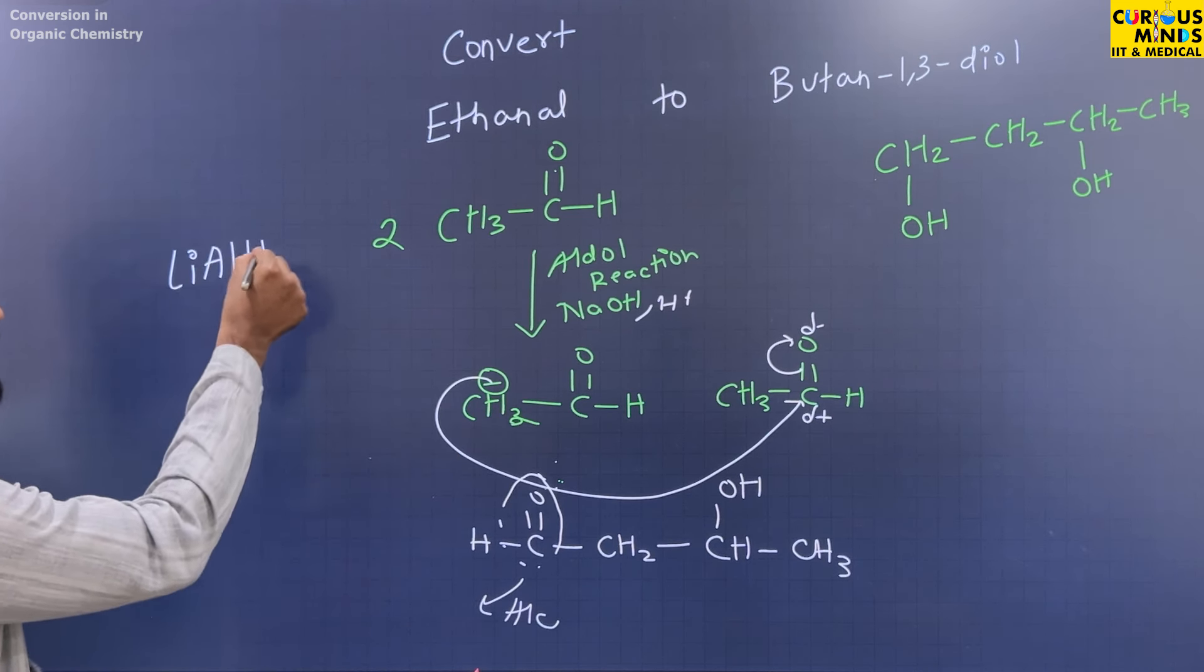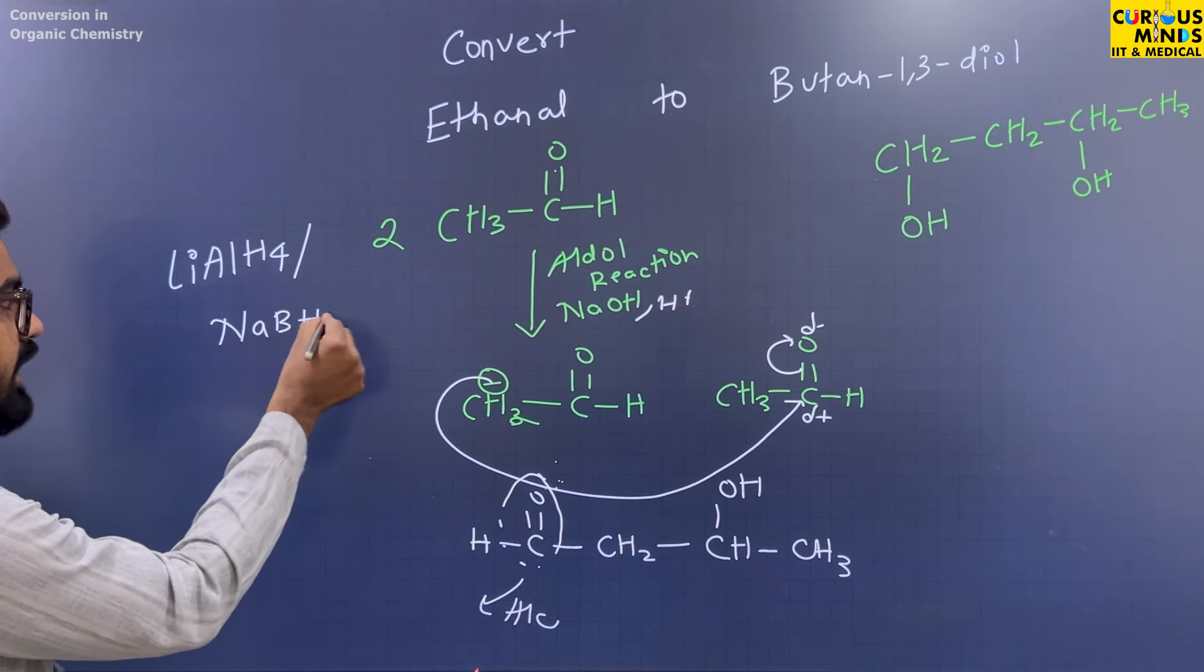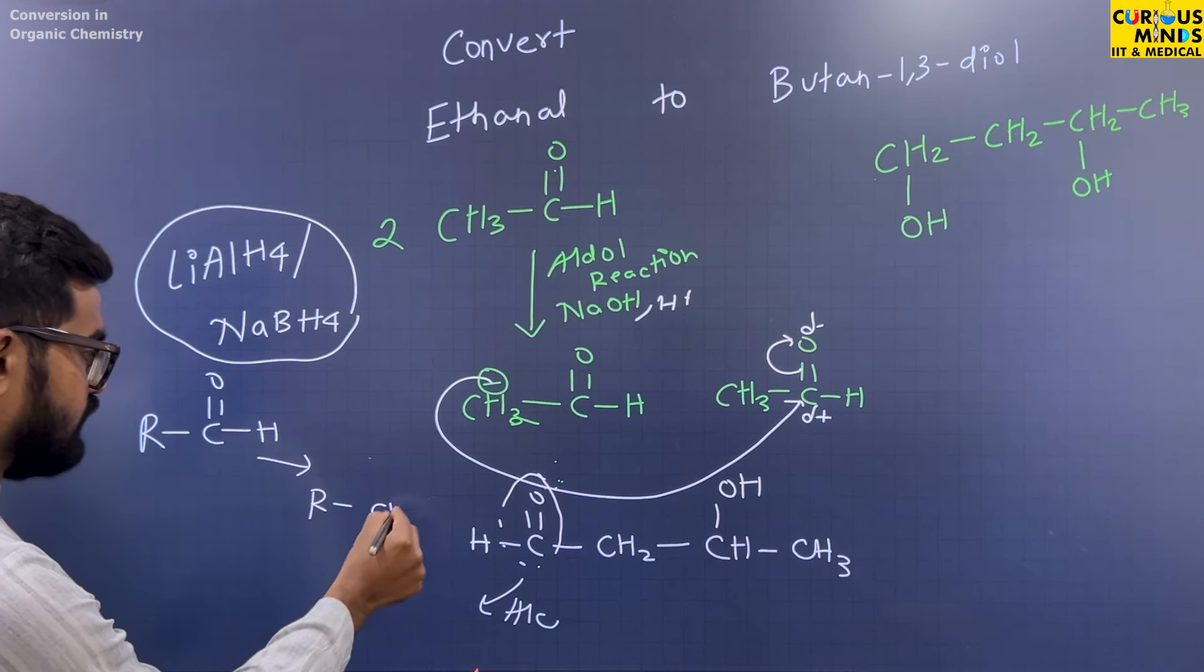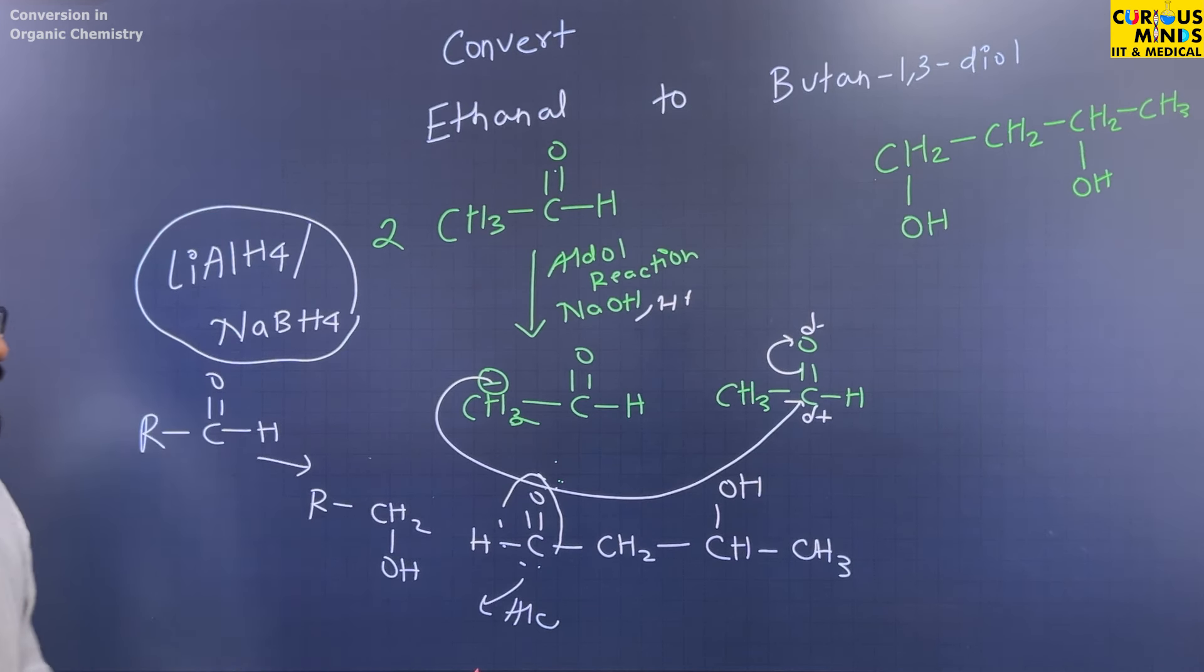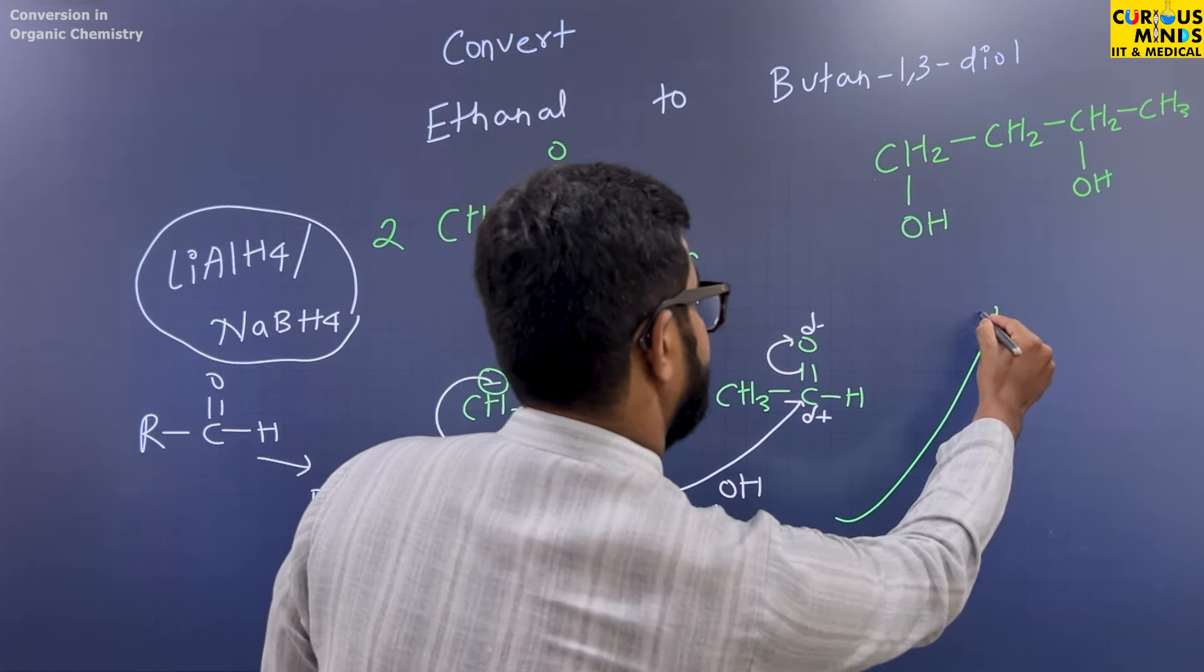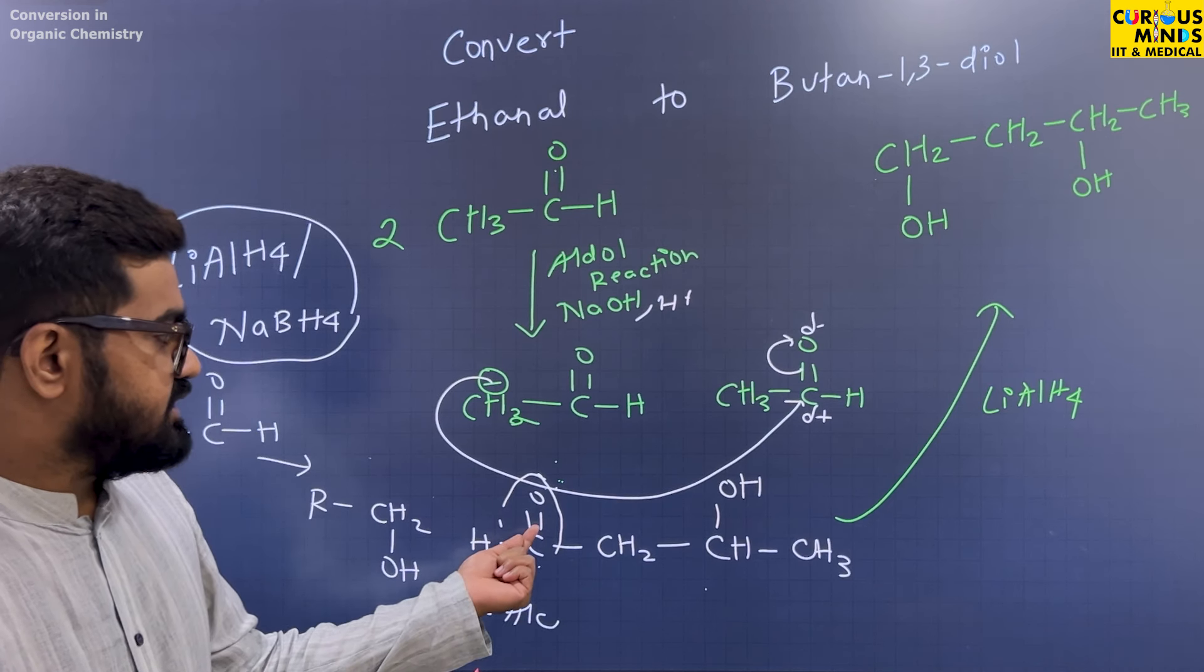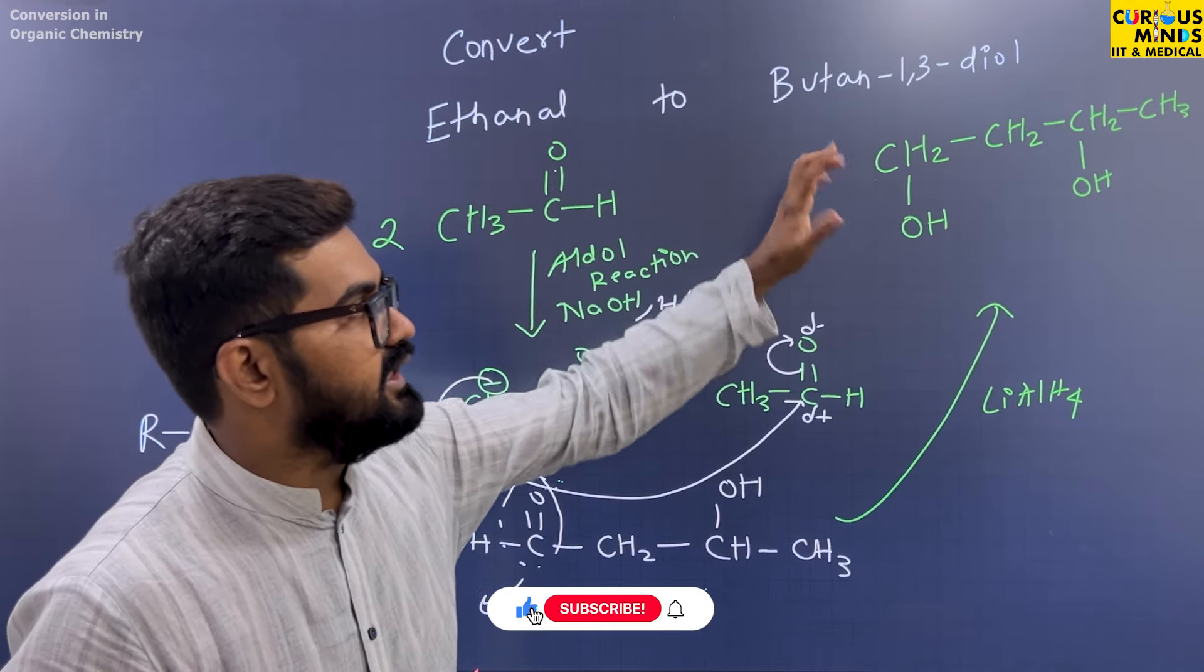Lithium aluminum hydride or sodium borohydride. These two make aldehyde or ketones into alcohol. So this will convert to RCH2OH. So here in the last step, you will add lithium aluminum hydride. This will convert to CH2OH, and you will end up with butane 1,3-diol.